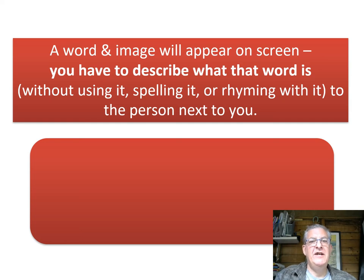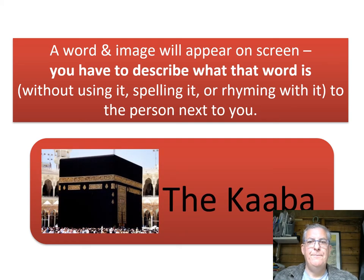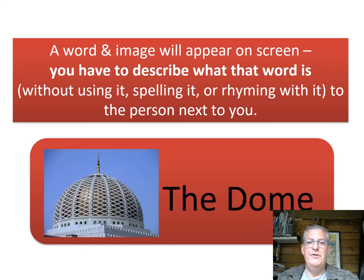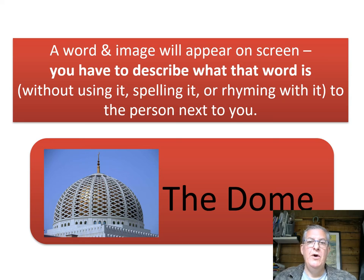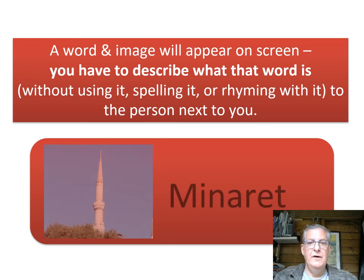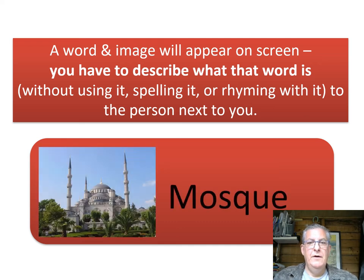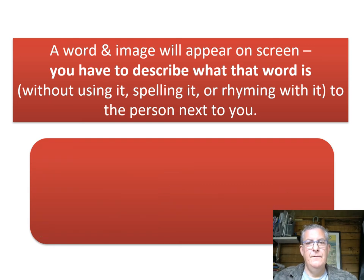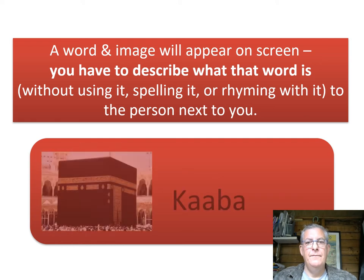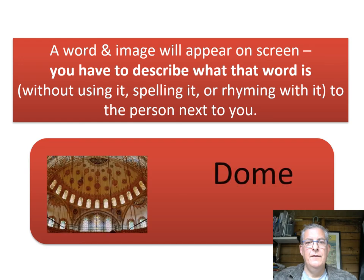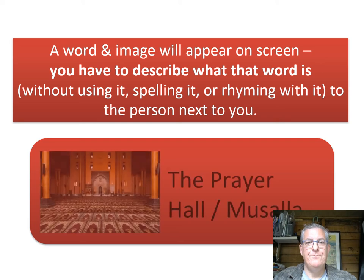Now a little test to finish off. With a person next to you — a member of your family or someone two metres away — you have to describe what the word is. Test yourself: see if you can remember the Qaba, the dome — the dome allows air to circulate better and also reflects sound around the mosque, as well as looking beautiful, since Islam stems from the Middle East and hot countries. The minaret, the minbar, the Qaba, the dome, the prayer hall, the masala.